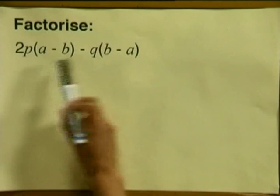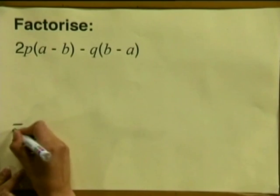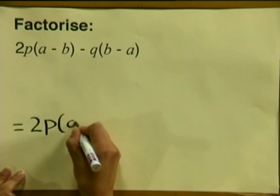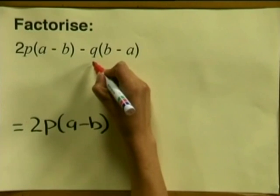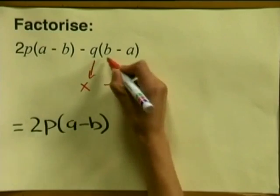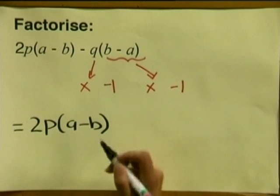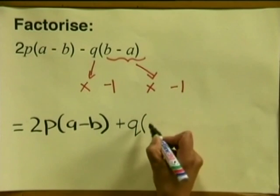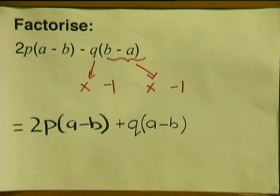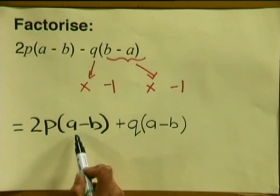Now look again at our example. Because I want to change the sign to get both brackets the same, I'm going to multiply the second term twice by minus 1. The first term stays the same: 2p multiplied by a minus b. But we multiply minus q by minus 1 to get plus q, and then b minus a multiplied by minus 1 gives us a minus b. So now we have 2p multiplied by a minus b, plus q multiplied by a minus b. Now we have a common bracket and we can take it out.